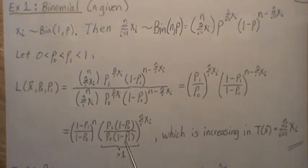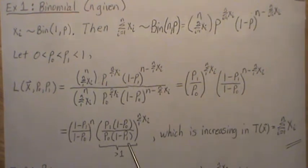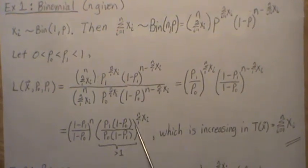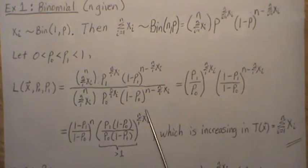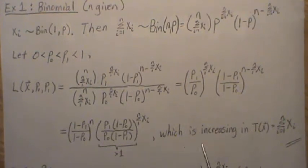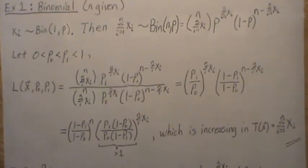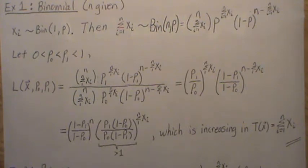So there's the p1 over p0, and then we took the reciprocal here to get rid of that negative. Well, this piece right here is a constant in regards to the x's, and this is greater than one. I'm going to leave that as a homework assignment to you. It's an increasing function in this statistic, so it is increasing in t(x) where t(x) is the sum of the xi. So it does possess the monotone likelihood ratio property.